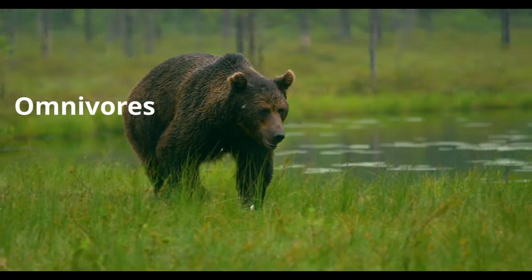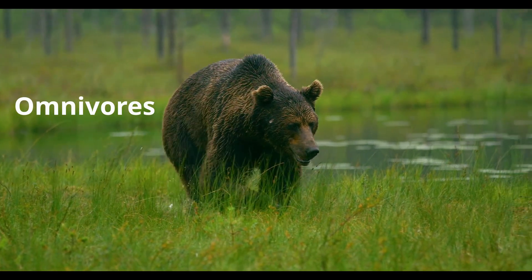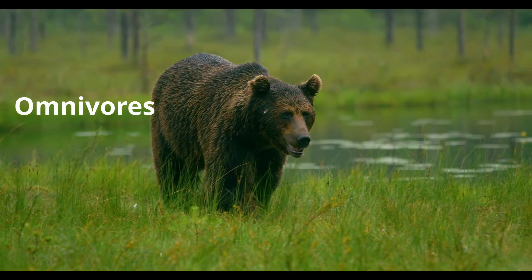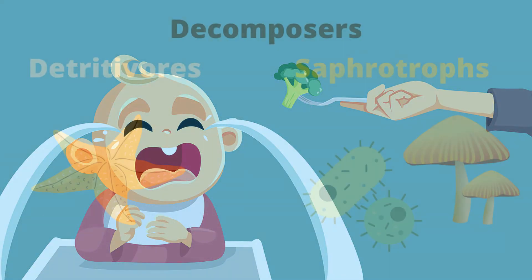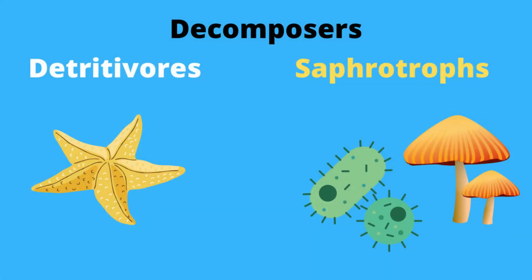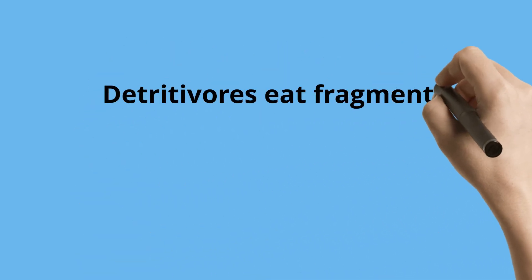An organism that eats plants and animals is called an omnivore. Examples include bears and most humans. Decomposers, like bacteria and fungi, are also classified as heterotrophs. They play a very important role in an ecosystem because they recycle nutrients back into the ecosystem. Two types of decomposers are detritivores, which eat fragments of dead matter.